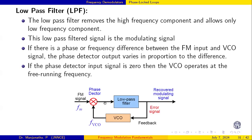The low pass filter output is a DC voltage that varies based on frequency variation. If there is a phase or frequency difference between the FM and the VCO signal, the phase detector output varies in proportion to that difference. If the phase detector input signal difference is zero, then the VCO operates at the free running frequency, meaning there is no error and the output is zero.